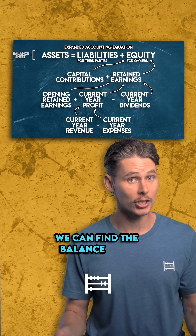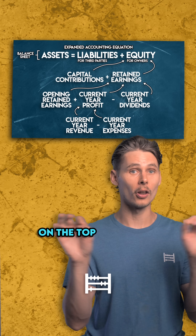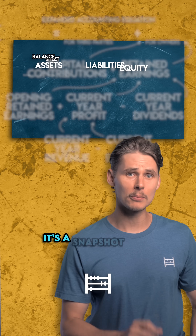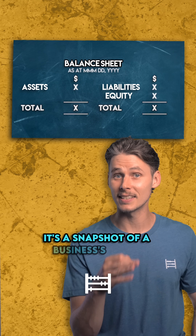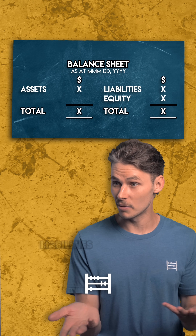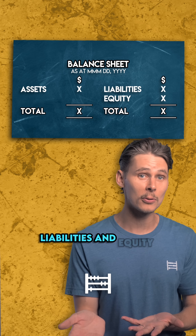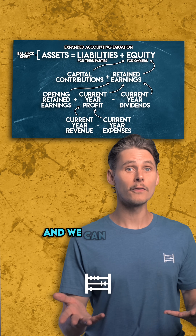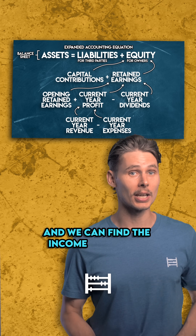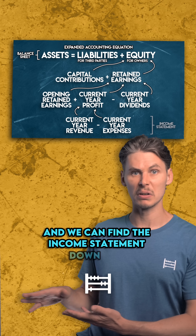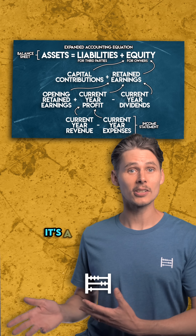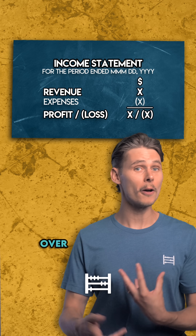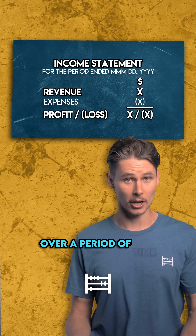We can find the balance sheet on the top line of the expanded accounting equation. It's a snapshot of a business's assets, liabilities and equity at a point in time. And we can find the income statement down here. It's a summary of a business's revenues and expenses over a period of time.